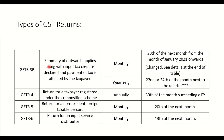GSTR-3B is a summary of outward supplies along with input tax credit declared, and payment of tax is effected by the taxpayer. For monthly returns, GSTR-3B is due on the 20th of the next month. For quarterly returns under the QRMP scheme, it is due on 22nd or 24th of the month following the quarter — we will see which states fall under 22nd and 24th at the end of the table.